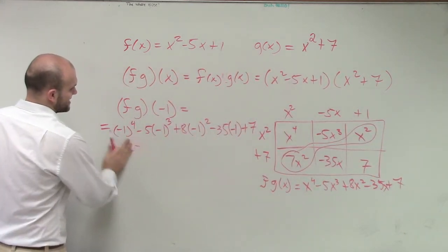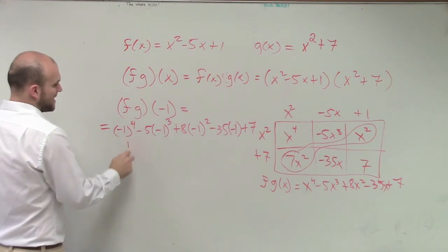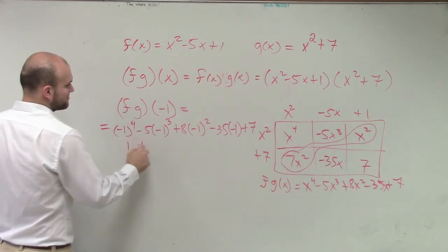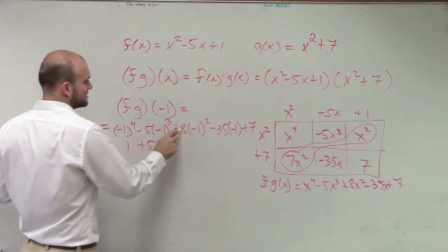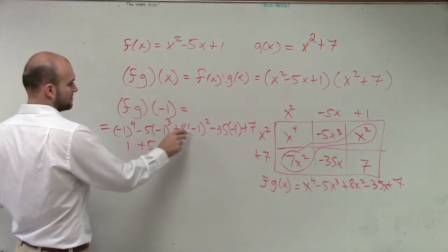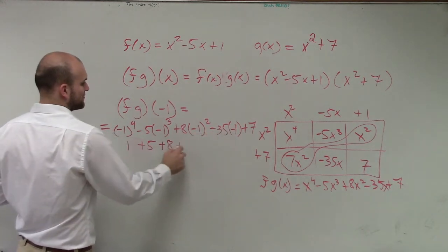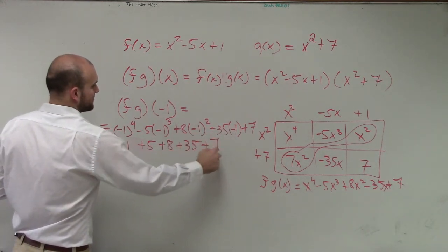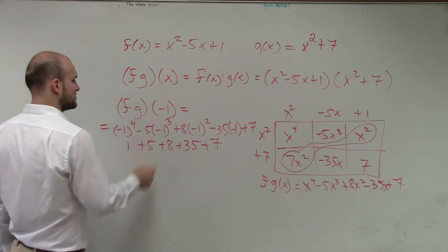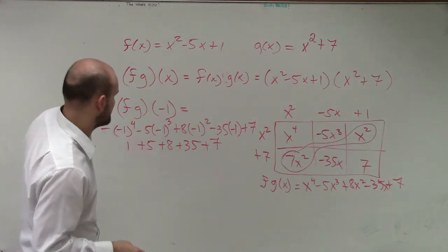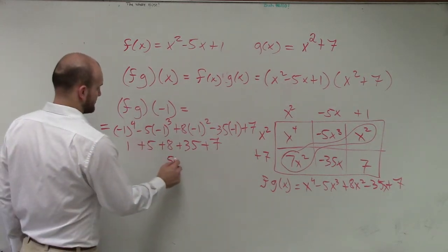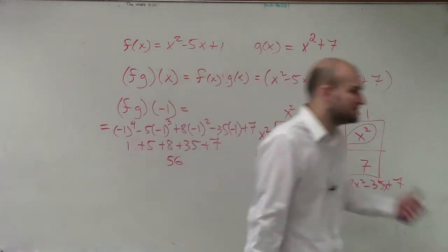Actually, let's just get this answer real quick. This becomes positive 1. That becomes negative 1, so plus positive 5. That's positive 1 times 8, so it's going to be plus 8. That's going to be a positive 35 plus 7. So therefore, we're going to get 6, 14, 49, 56. Okay. So you guys can say 56.